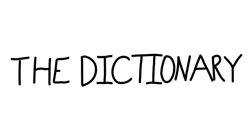Next we have ageratum, A-G-E-R-A-T-U-M, a noun from 1866: any of a genus of annual tropical American composite herbs often cultivated for their small showy heads of usually blue or white flowers; also a related blue-flowered perennial. The genus is Ageratum and the perennial is Eupatorium coelestinum, E-U-P-A-T-O-R-I-U-M C-O-E-L-E-S-T-I-N-U-M. The etymology says this is from the Greek ageratos meaning 'ageless,' from geros meaning 'old age.'